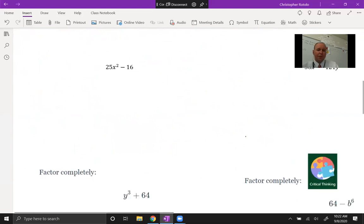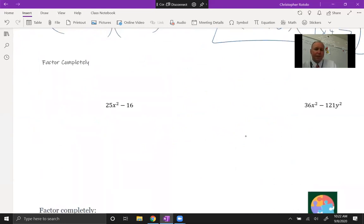Next thing we have, factoring completely, these are a difference of two squares. So we get 5x and 5x. Square root of 16 is 4 and 4. Sign of the end is negative, so I need 1 plus 1 minus. That'll get us through these.